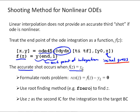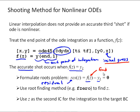And we can use that to formulate a roots problem. The residual of the roots problem is going to be f of z minus y_L. We want to find the value of z — that's our initial condition guess — such that f of z equals y_L, or equivalently, f of z minus y_L is equal to 0.